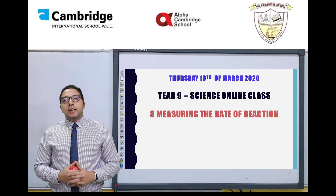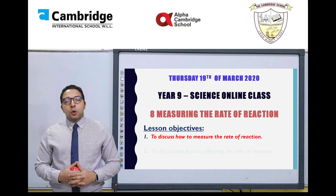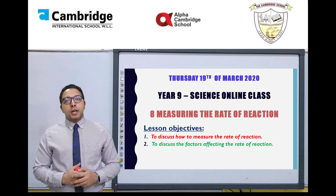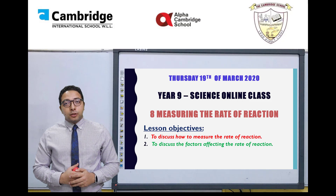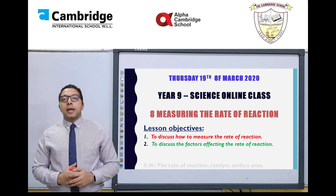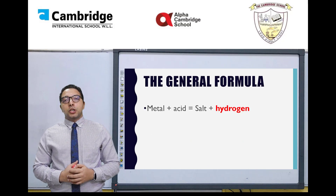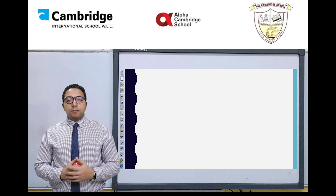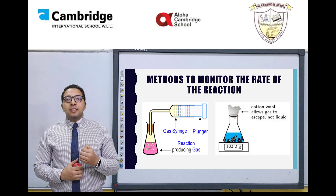Hello Year 9. In today's lesson we're going to have two lesson objectives. The first one is learning how to measure the rate of the reaction. The second one is to find out the factors affecting the rate of the reaction.